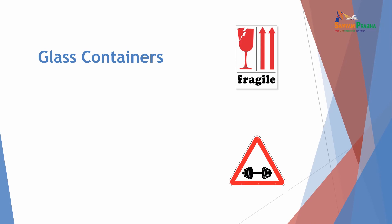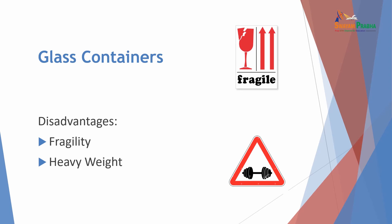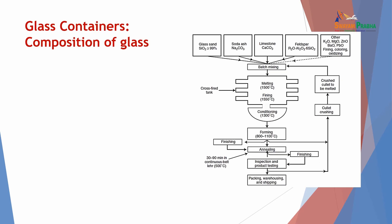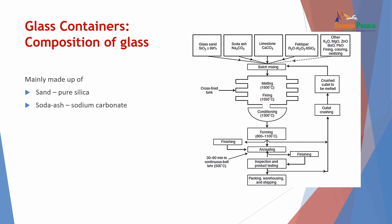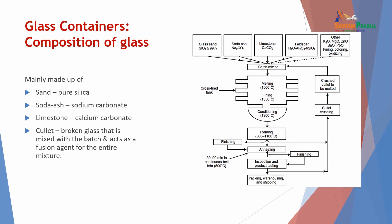Glass containers are associated with a few disadvantages: they are fragile — easily broken — and heavier in weight compared to other materials. The composition of glass: mainly made of sand (pure silica), soda ash (sodium carbonate), limestone (calcium carbonate), and cullets — broken glass mixed with the batch that acts as a fusion agent. Sand, soda ash, limestone, feldspar and other agents are batch-mixed, then melting is done at ~1500°C, followed by refining, processing, conditioning, annealing, and finishing.